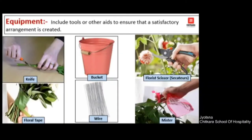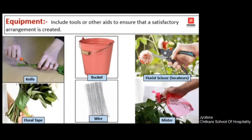The next category is equipment — these are other tools that help ensure you are making a satisfactory arrangement. You have a knife, bucket, florist scissor, mister, wire, and floral tape. A knife can be used to cut glass stems. Buckets are used to put all the flowers and plant materials in water so they stay hydrated and fresh. Florist scissor, also called secateur, is a special scissor used to trim and cut flower stems. Floral tape helps to combine a bunch of flowers or plant material together. Wire provides support to stems. A mister is a spray bottle used to spray fresh water on the flower arrangements.